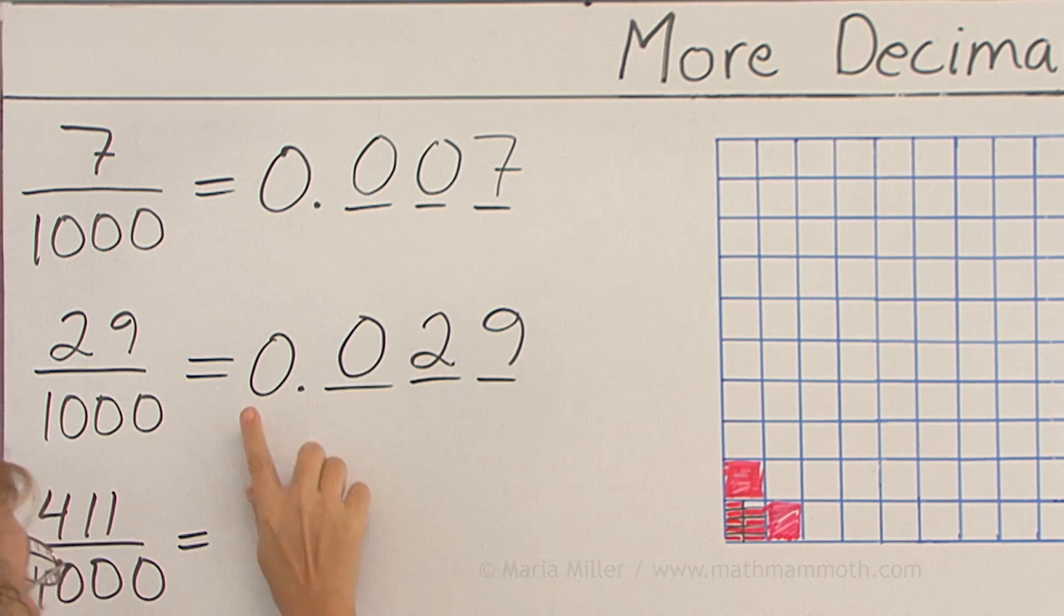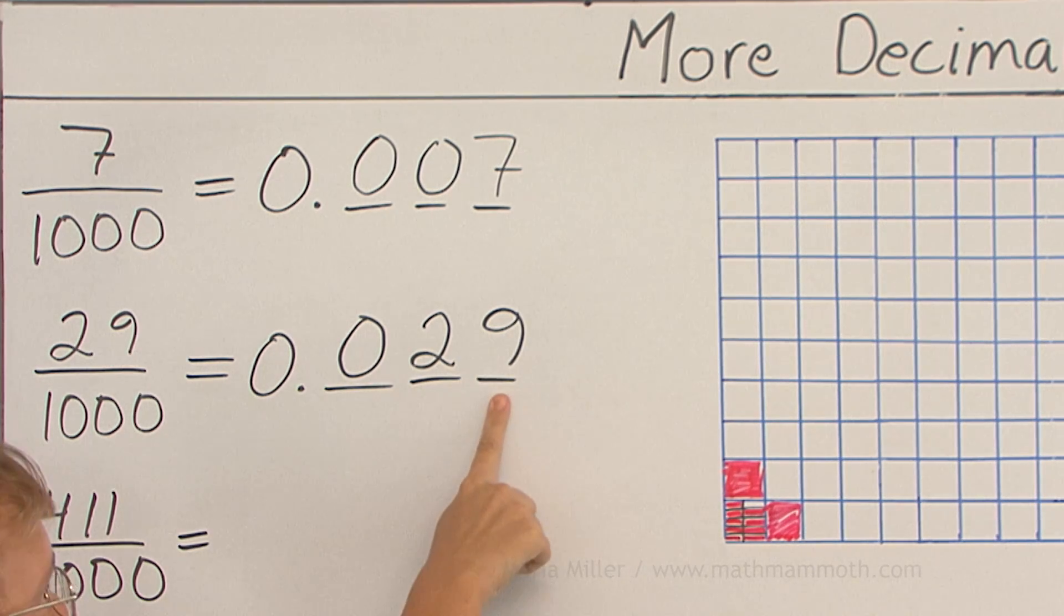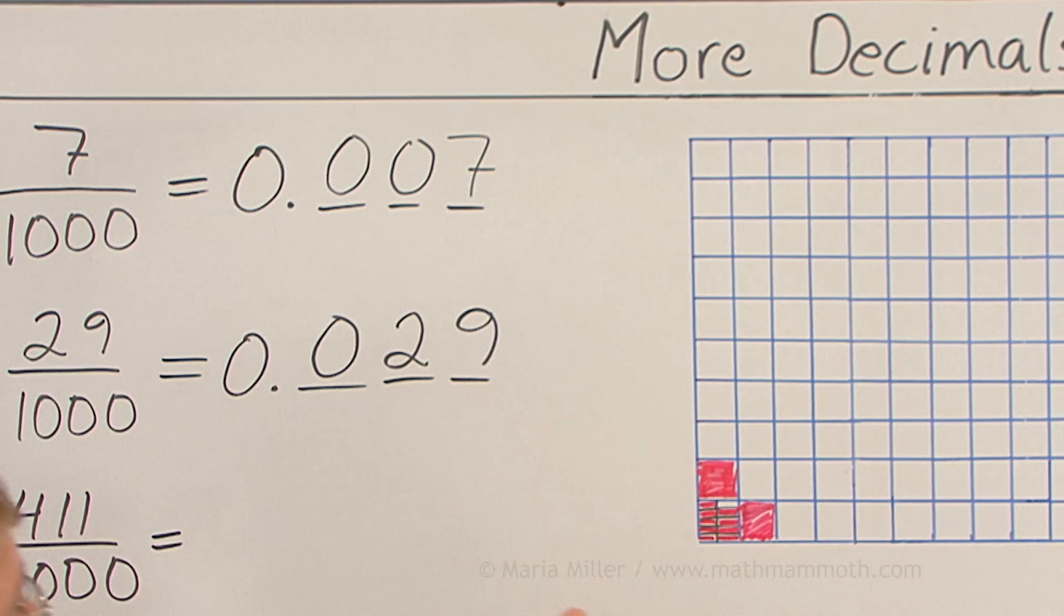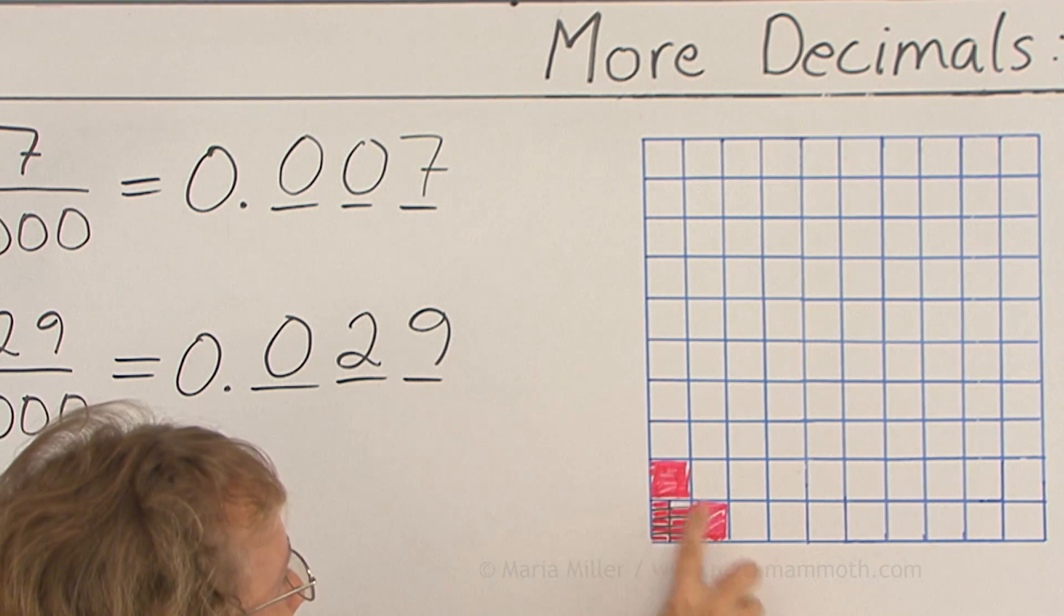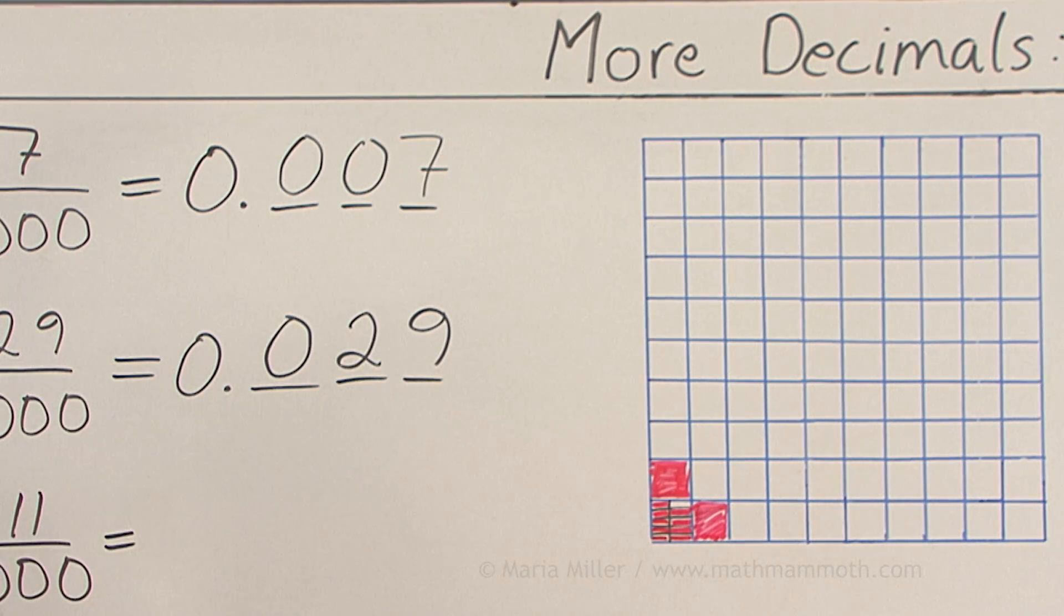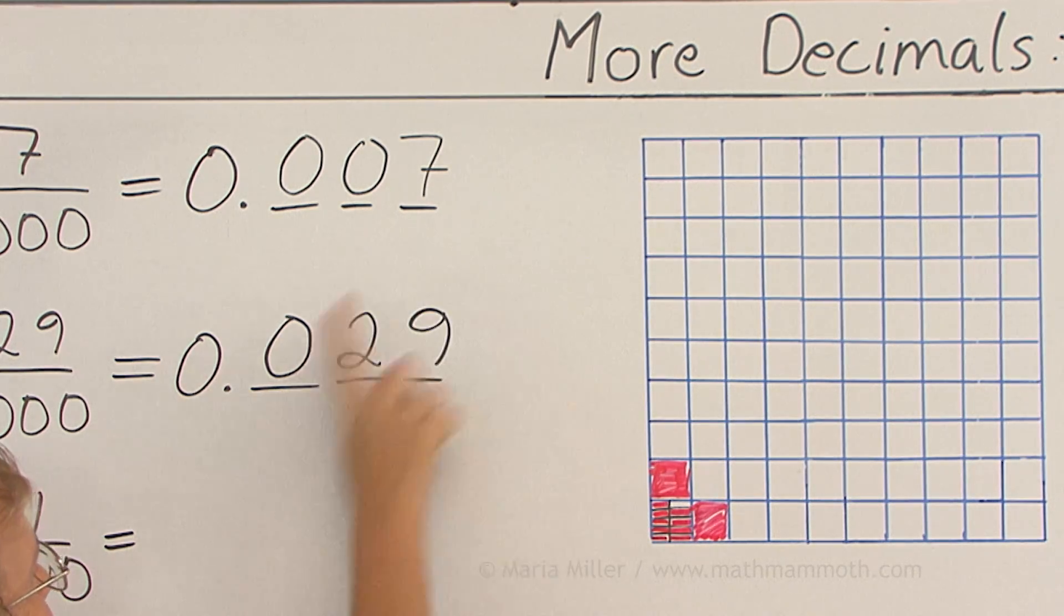Notice though that this is, while it is twenty-nine thousandths, it is also two-hundredths and nine-thousandths. Look at the picture again. This square and this square, each one of those is one-hundredth. So we have two-hundredths here and nine-thousandths. But in total twenty-nine thousandths.